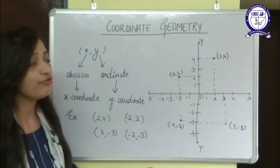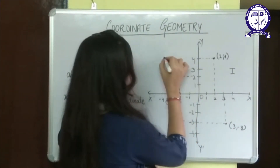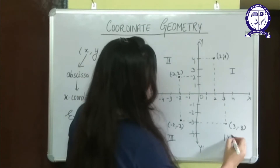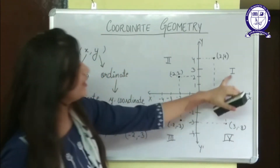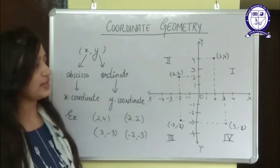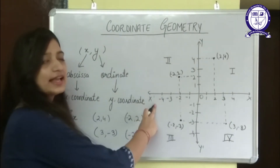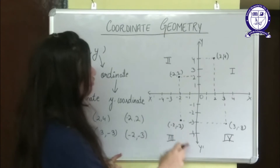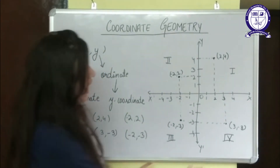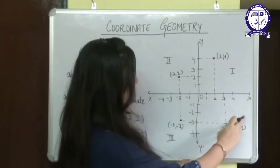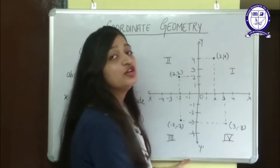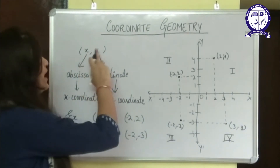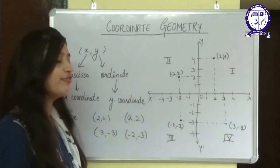So basically we have 4 quadrants: Quadrant 1, 2, 3 and 4. In the first quadrant both x and y are positive. In the second quadrant, x is negative but y is positive. In the third quadrant, x and y both are negative. And in the fourth quadrant, x is positive and y is negative. The main thing to remember is that the first value is for x and the second is for y.